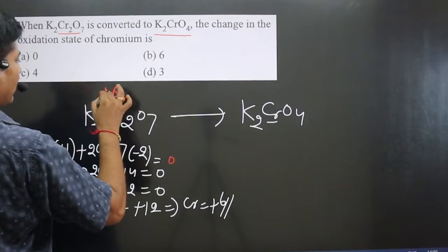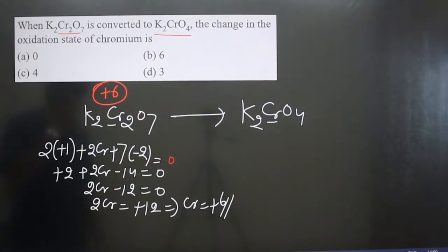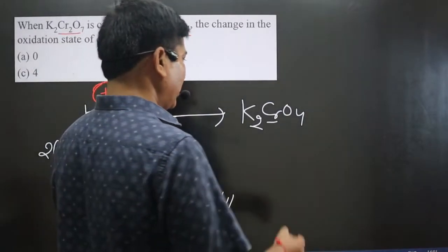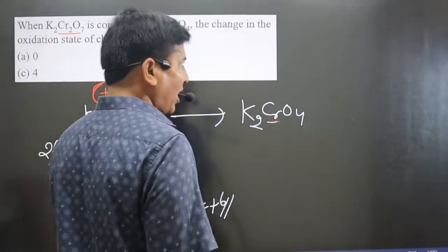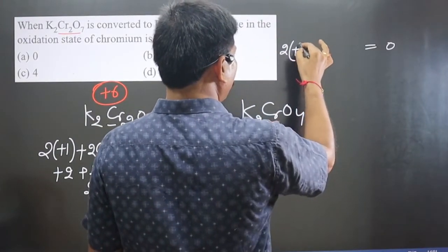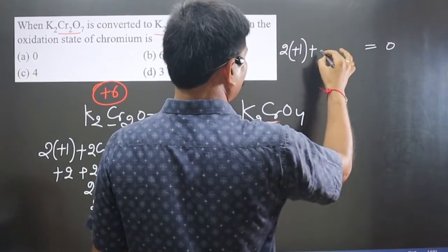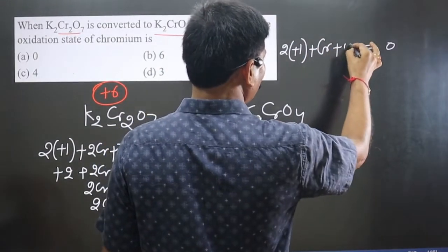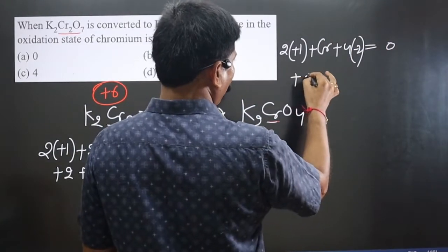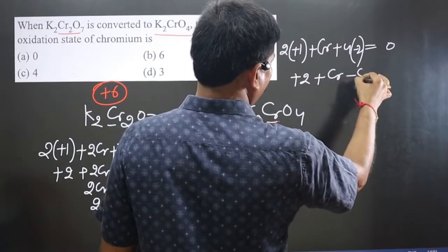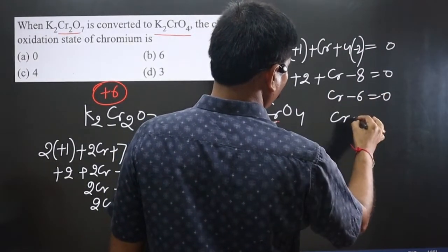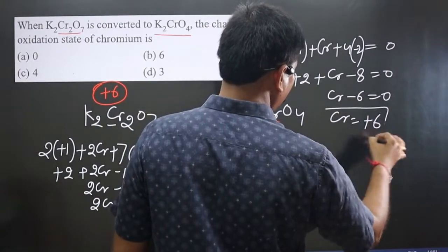Therefore Cr = +6, so in K₂Cr₂O₇, chromium is present in the +6 oxidation state. Now for the second compound K₂CrO₄: it is also a neutral compound, so total oxidation number equals zero. Two potassium at +1, one chromium, and four oxygen each at −2. So: +2 + Cr − 8 = 0.